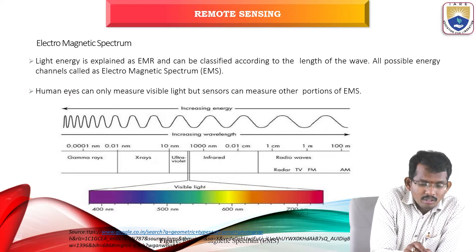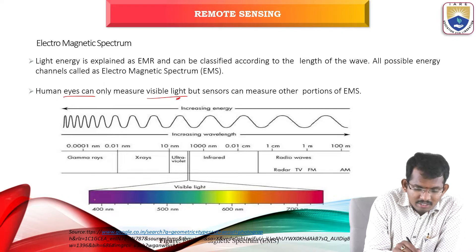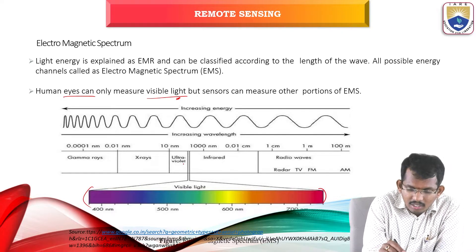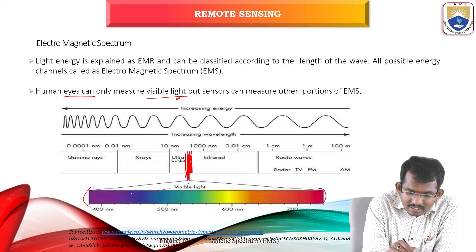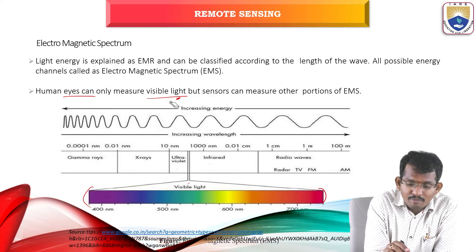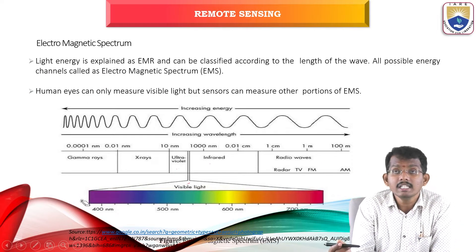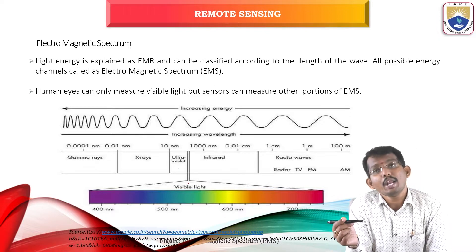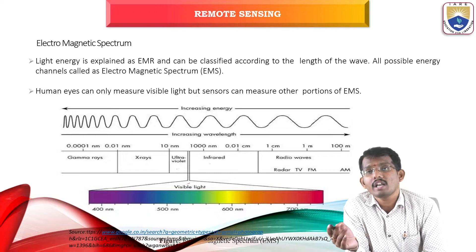The sun is the main source of energy — electromagnetic energy. Energy propagates in the form of electromagnetic radiation; the sun emits energy as electromagnetic radiation consisting of electric and magnetic fields. Light energy is explained as electromagnetic radiation, classified by wavelength. All possible energy channels form the electromagnetic spectrum. Human eyes can only measure visible light, but sensors can measure other parts of the EMR. The visible spectrum is the region between ultraviolet and infrared. Other sensors can read UV, IR, near IR, and far IR radiation.